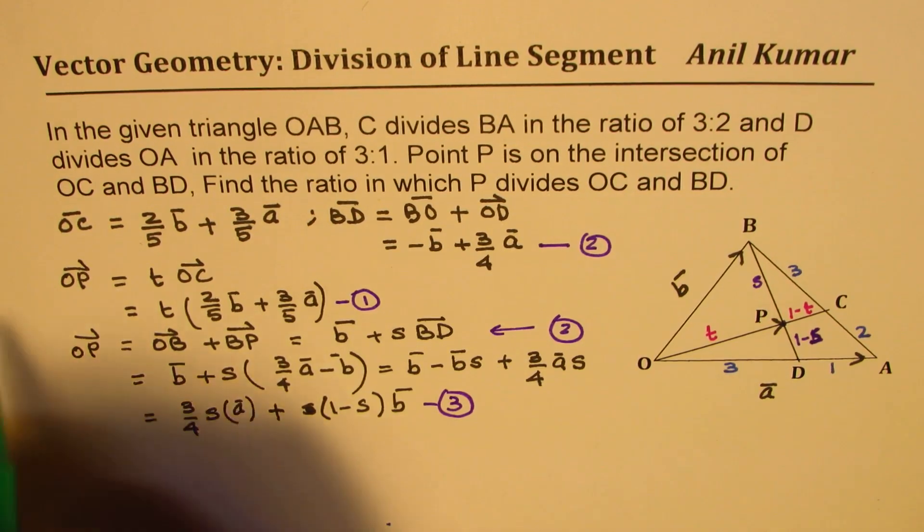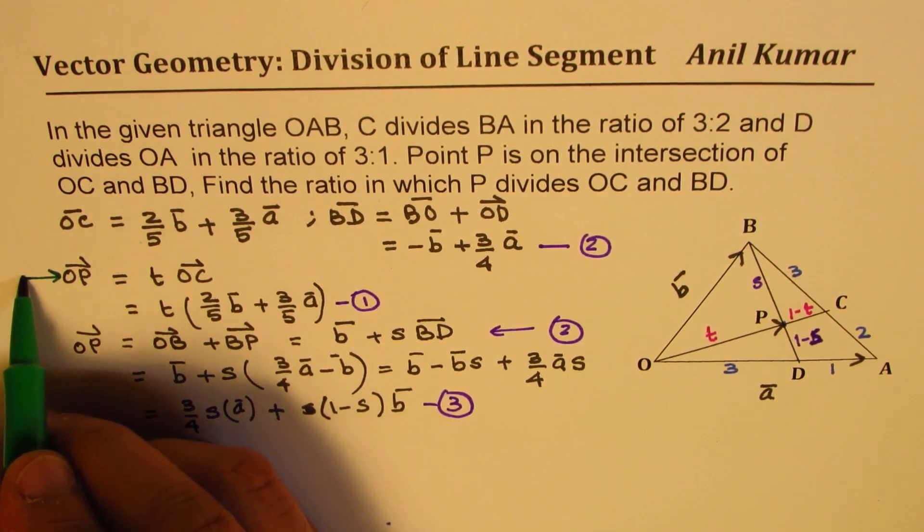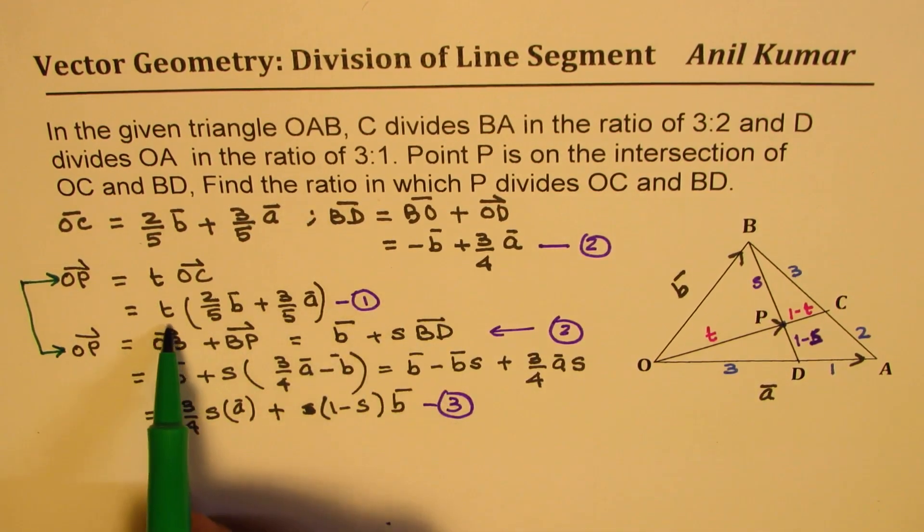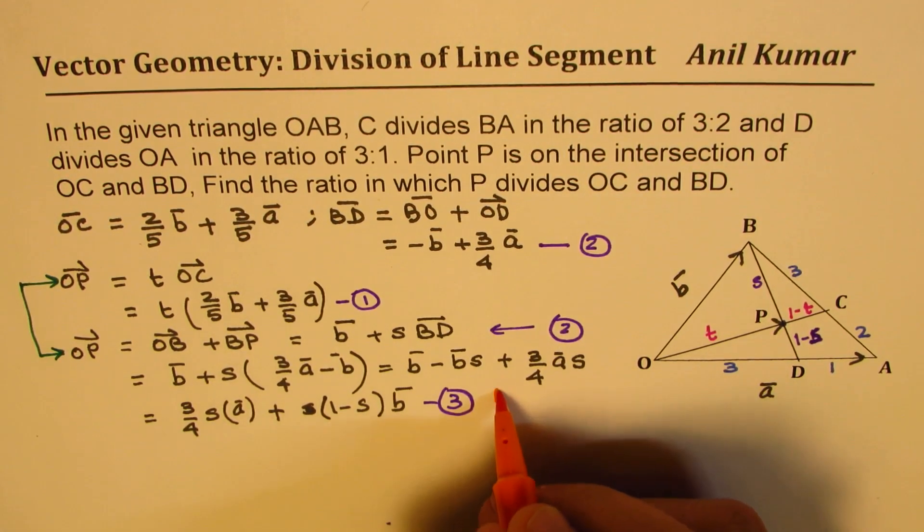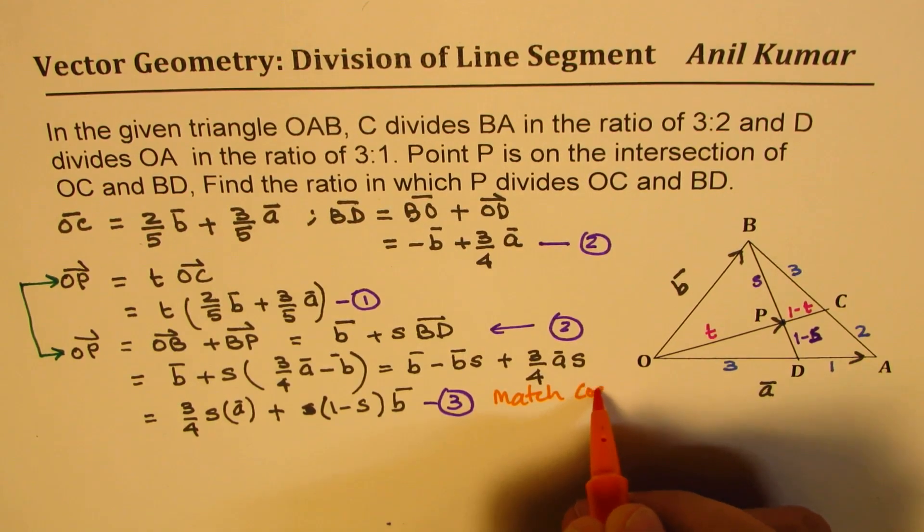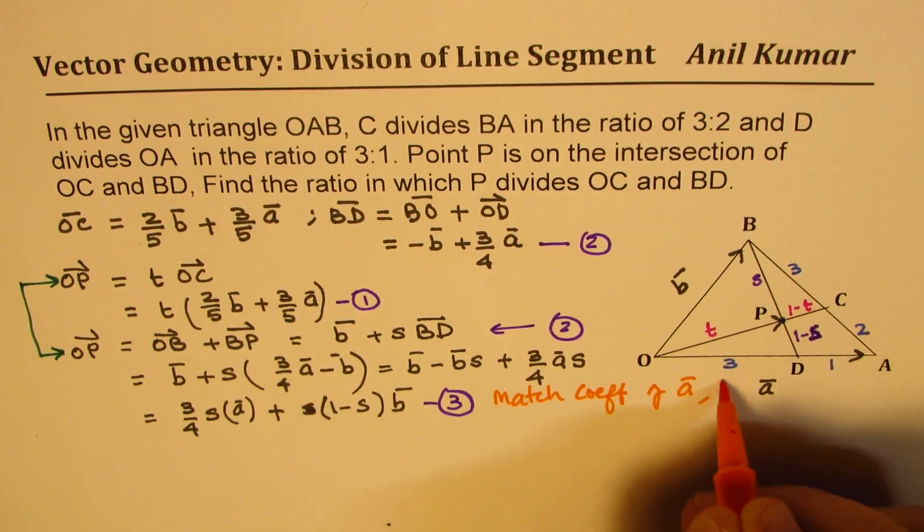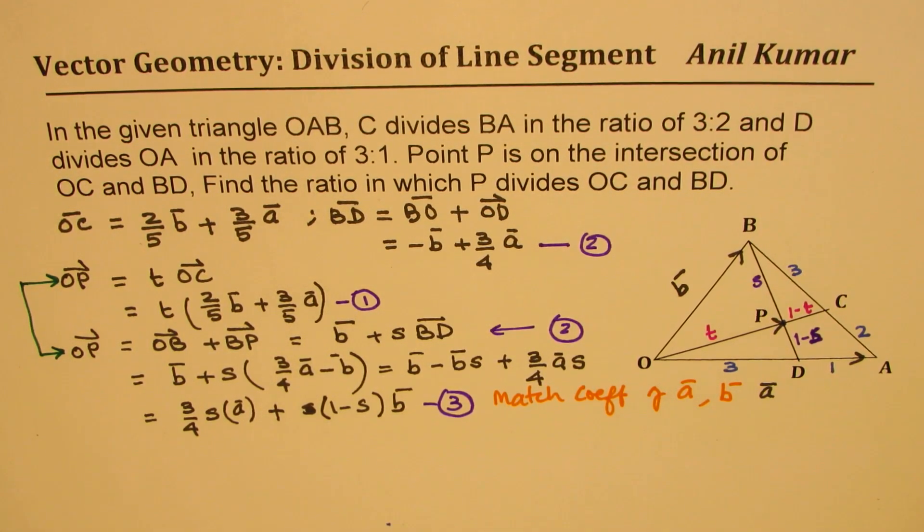Now, what you see here is that OP has now been written in two different ways. One, we have OP in the parameter T and another time OP with the parameter S. We are interested in both T and S, right? So what should we do? So from here, what we are going to do is the coefficients of A and B we are going to match and then find T and S. Got the idea? So the trick involved here is to match coefficients of vector A and B. So that is the trick. That helps us to really solve this question.